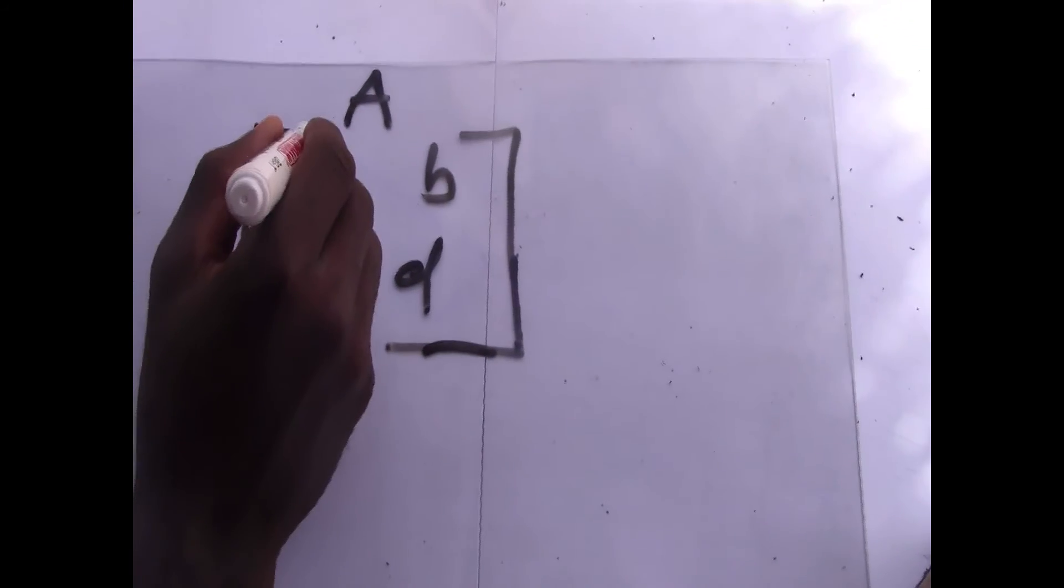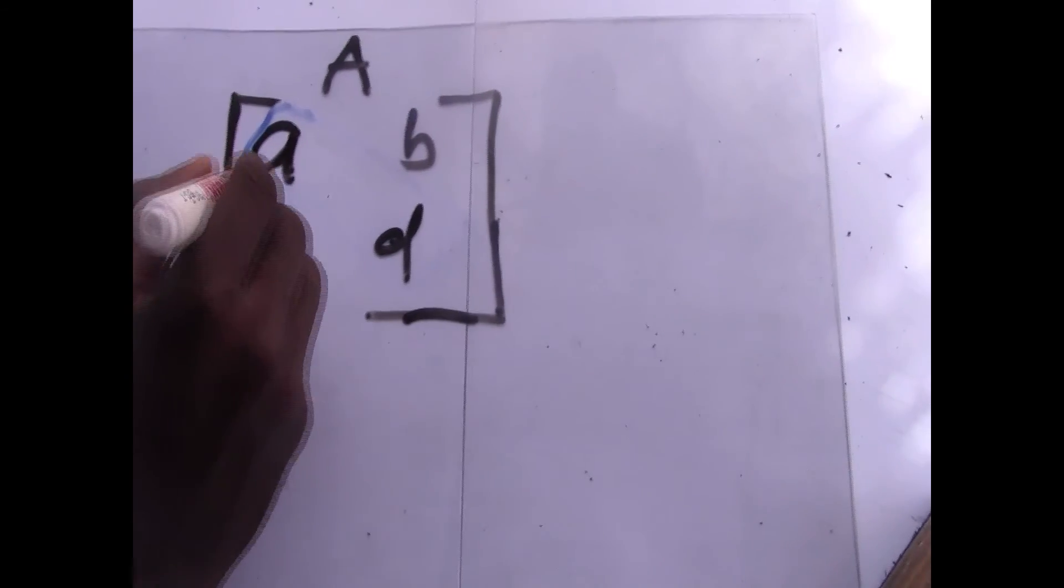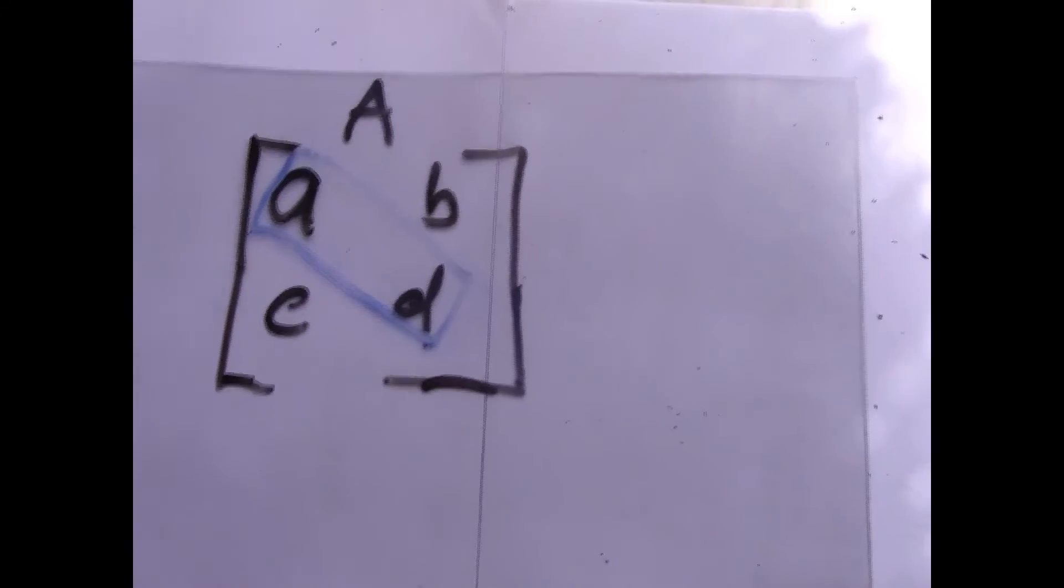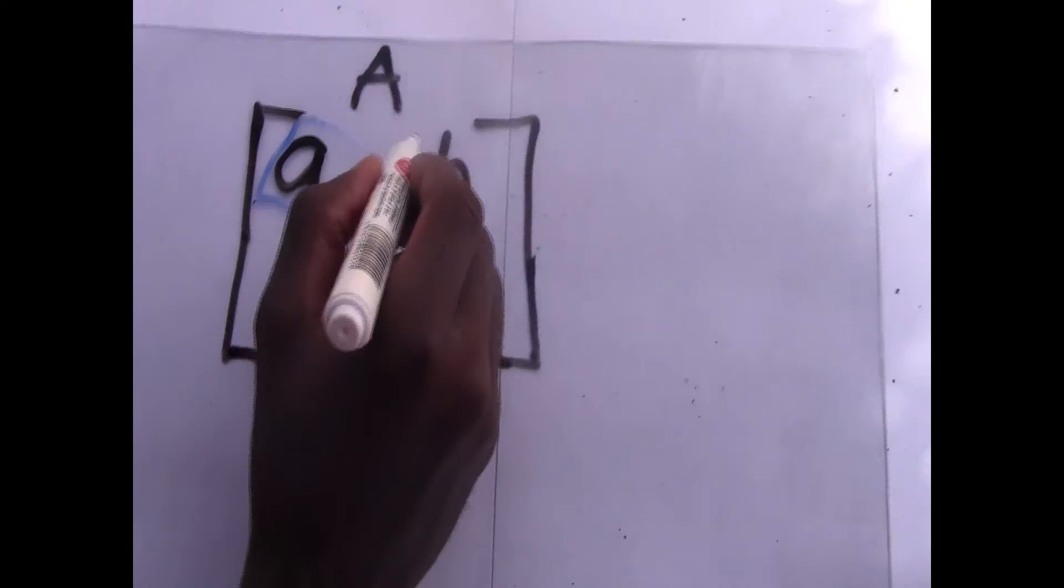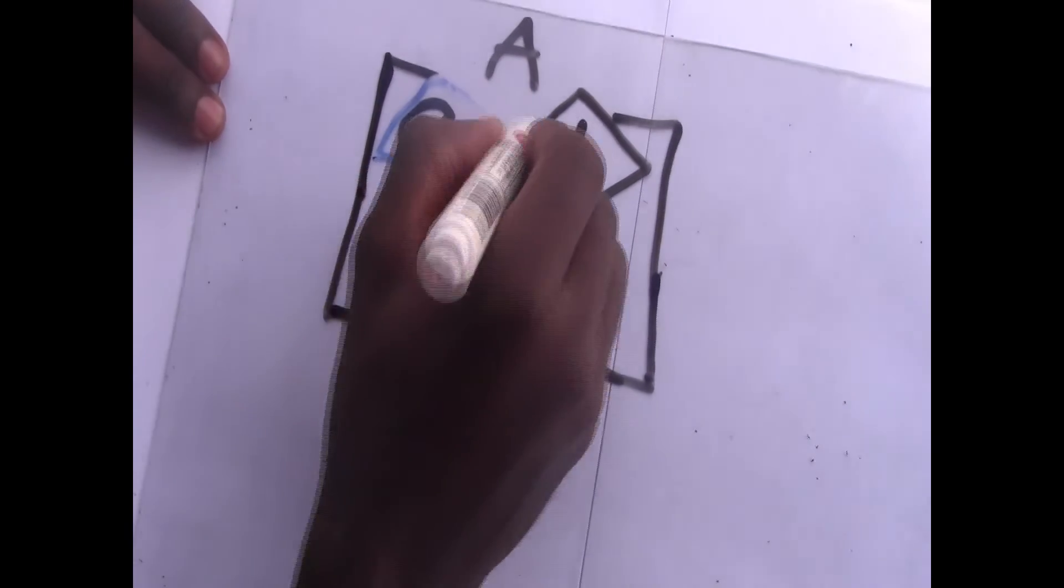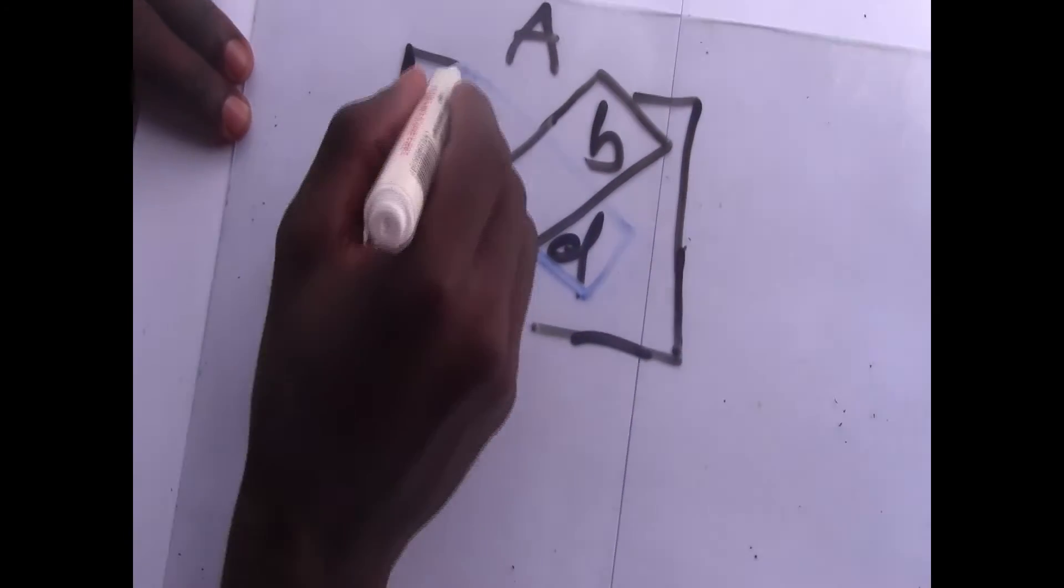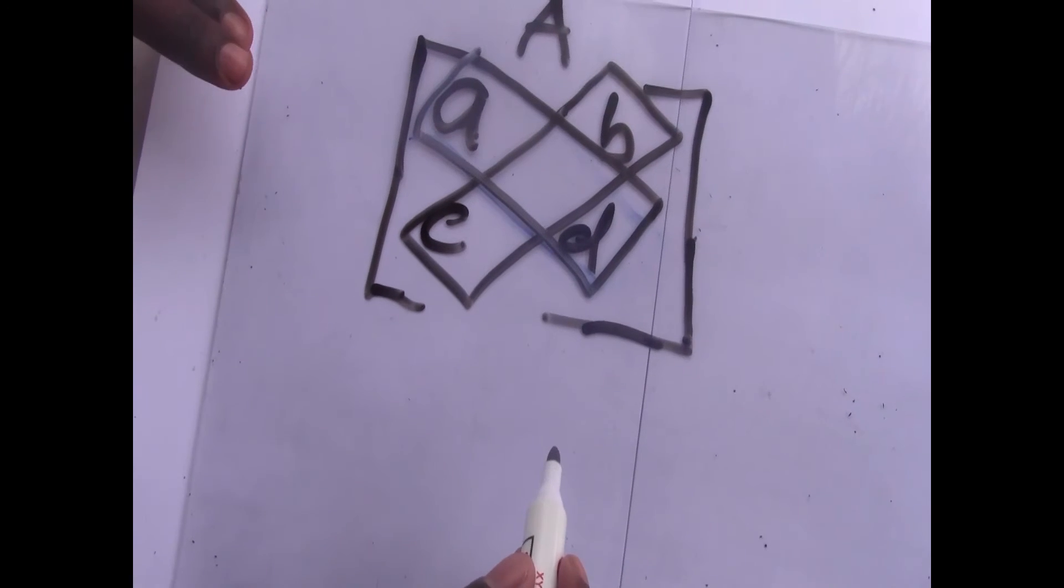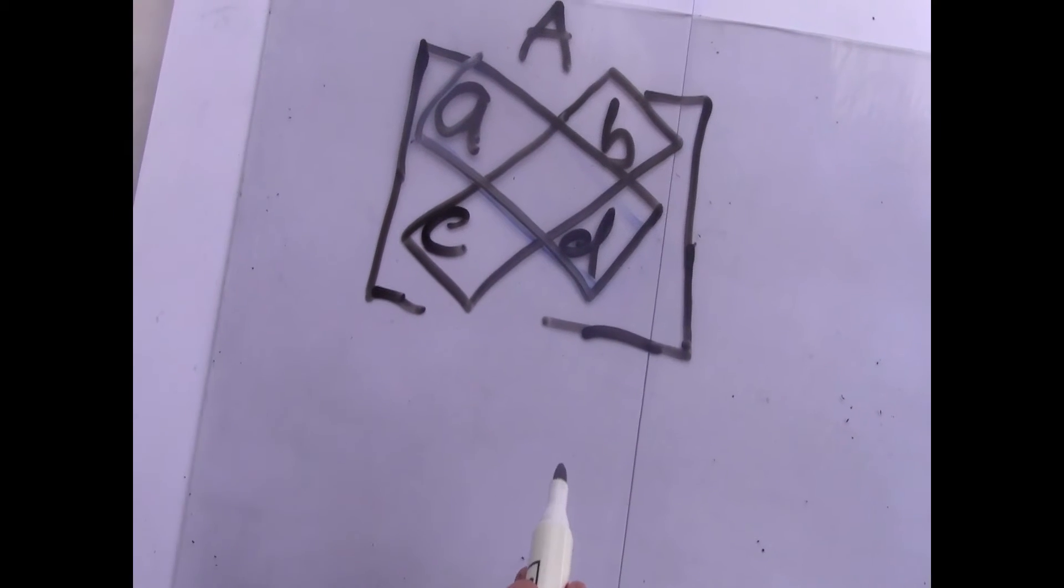First diagonal is the leading diagonal. The leading diagonal is AD and then you have the secondary diagonal. The secondary diagonal is BC. So the leading diagonal is AD and the secondary diagonal is BC.